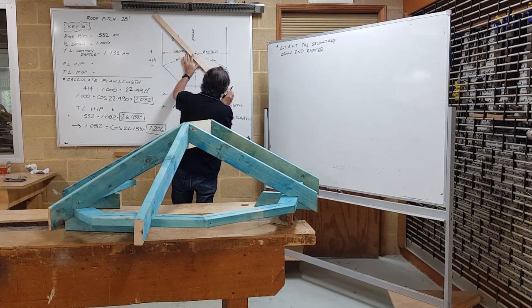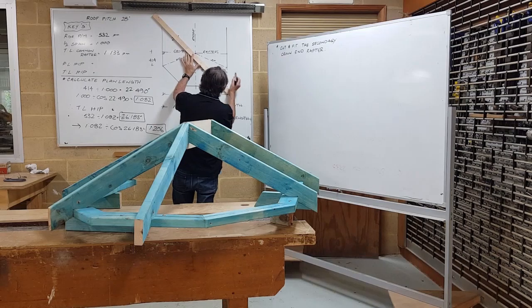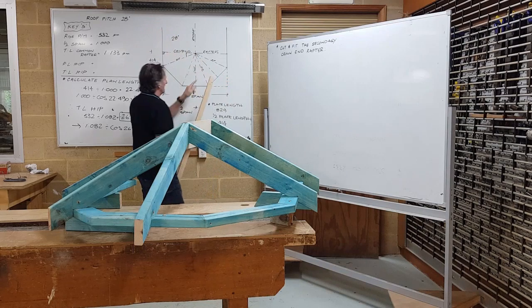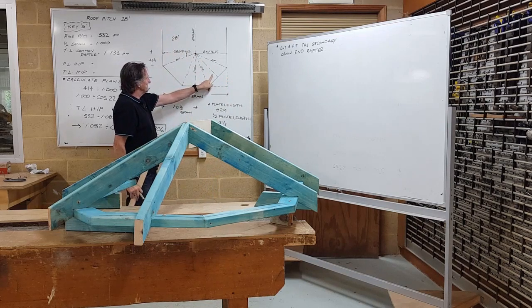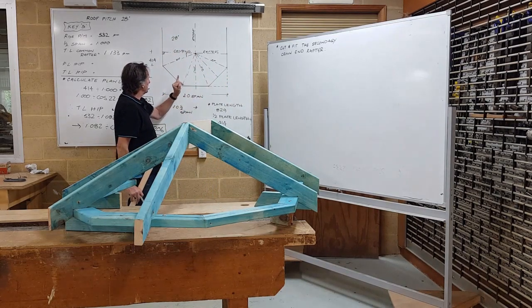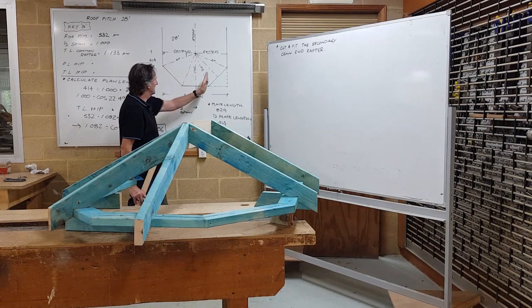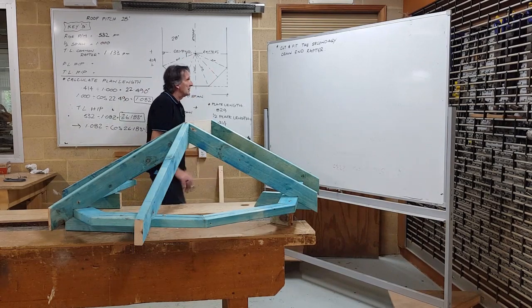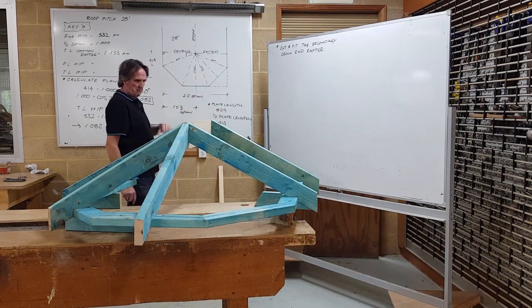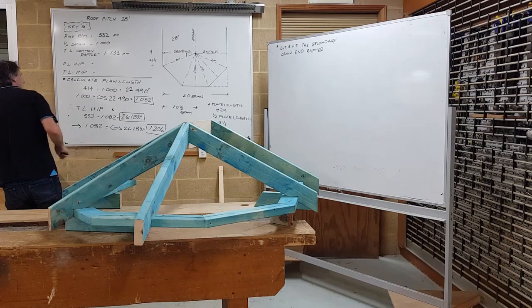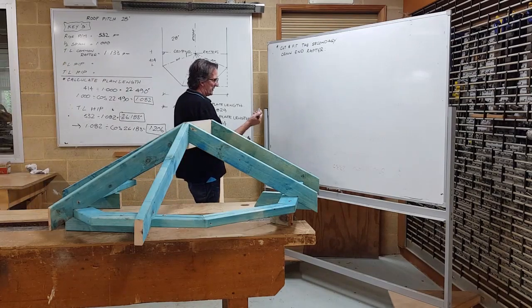So the centerline of the secondary crown end rafter is right there and there's one, two, another one over here will slip between the two hips. So calculating the length of that for a millimeter perfect cut, not too difficult.